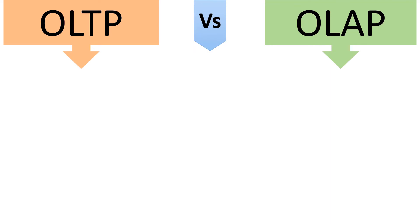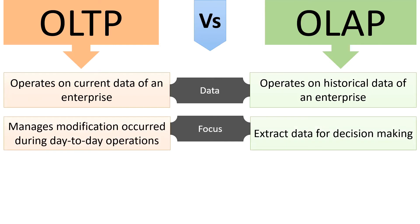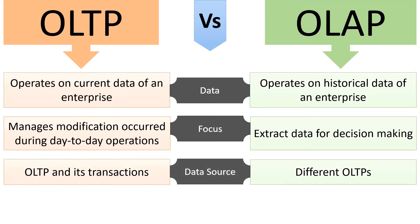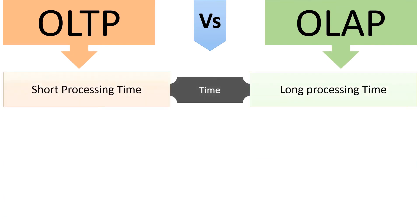Now let us talk about the differences between OLTP and OLAP. OLTP operates on current data of an enterprise whereas OLAP operates on historical data. OLTP manages data modifications that occur during day-to-day operations, while OLAP extracts data for decision-making. The source of data in OLTP is OLTP itself and its transactions, while the source of data in OLAP is a merger of different OLTPs.